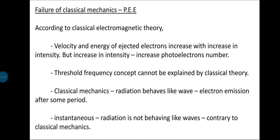If radiation behaves like a wave, electron emission takes place only after some period — there is an induction period. But what we observe is that electrons are not ejected after some time; they are ejected instantaneously. So the radiation is not behaving like a wave, and this cannot be explained by classical mechanics. The instantaneous emission of photoelectrons is contrary to classical mechanics. Classical theory fails to explain the experimental observations of the photoelectric effect.